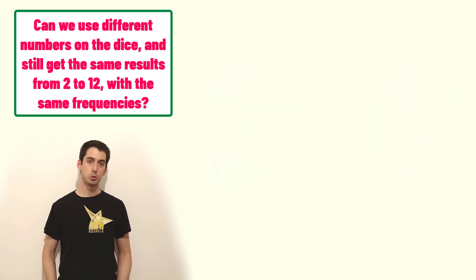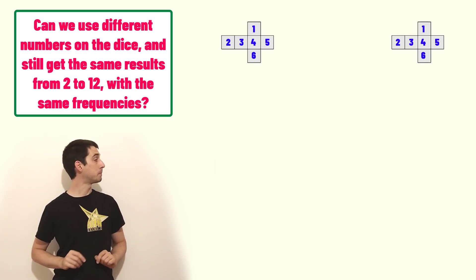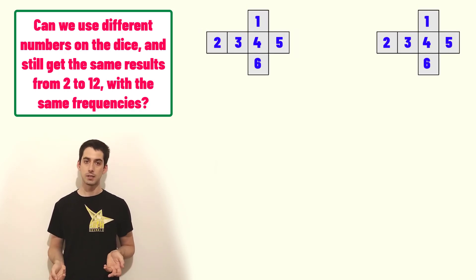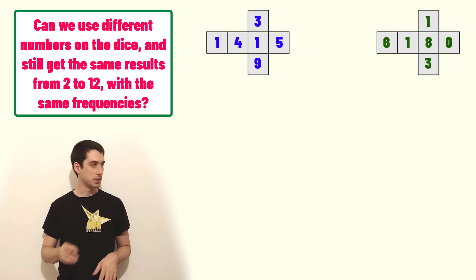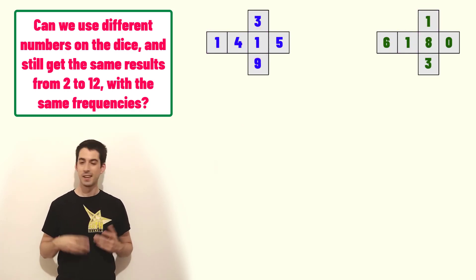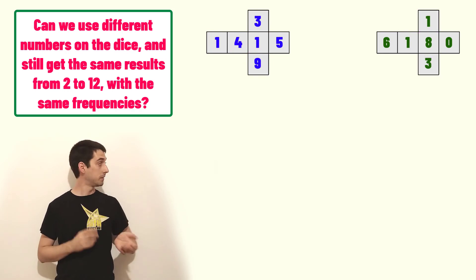A possibility of finding a solution is to go by trials and errors. We will use these pictures to represent our dice and let's choose two completely random dice. You see repeated numbers, numbers bigger than six, even the number zero.